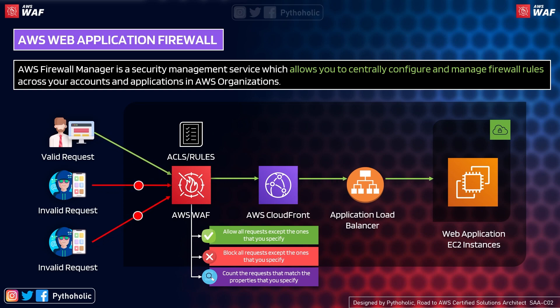So to summarize: 'Allow all requests except the ones you specify' means you are writing deny rules. 'Block all requests except the ones you specify' means you are only providing allow rules. And the third option is counting the request metadata or properties. Once done, the CDN propagates to the load balancer and the allowed requests reach the website or web application.